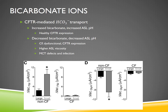CFTR-mediated bicarbonate transport was clearly different in those cases. Increased bicarbonate ion transport is related to an increase in airway surface liquid pH, creating a more basic environment, which is characteristic of healthy CFTR functioning that you would see in healthy cells — people without cystic fibrosis.